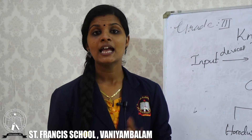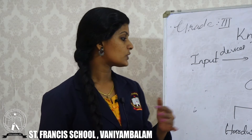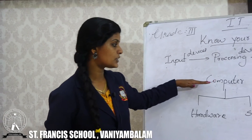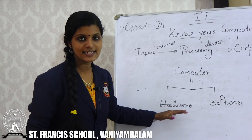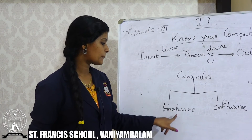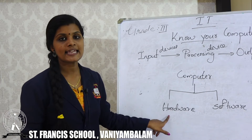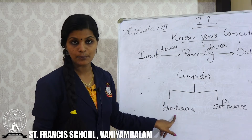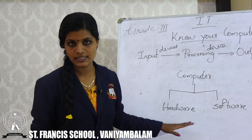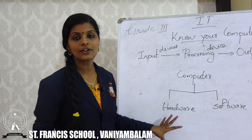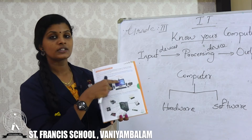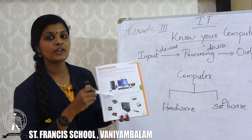Now we have seen the pictures of computer hardware. These hardware and software will help the computer to work efficiently. Hardware devices are the devices or parts of the computer which we can see and touch — examples: keyboard, speaker, monitor, CPU, CPU box. In page number 3, all the parts of computer hardware are clearly given.